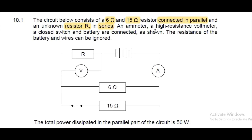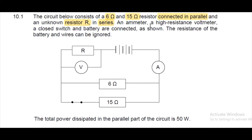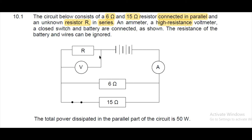So you have your 6-ohm resistor connected in parallel to the 15-ohm resistor, and both are connected in series with resistor R. There's also an ammeter and a high-resistance voltmeter. It's important to mention the high resistance because a voltmeter has effectively infinite resistance, meaning current cannot flow through it — current only travels through the resistors.